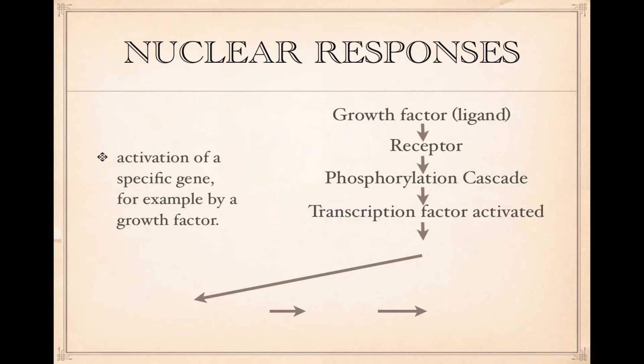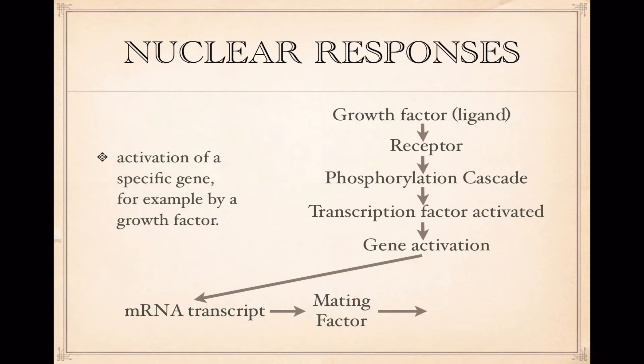It's going to activate a transcription factor in the nucleus — a small protein is going to get turned on, which is then going to activate a gene. By gene activation, we mean that the gene is now ready to be transcribed or changed into a piece of messenger RNA. Once transcription is finished, we have a piece of messenger RNA. The messenger RNA could be a mating factor, which could then signal yeast cells to mate and grow, like we first talked about in the very first video cast for this unit.